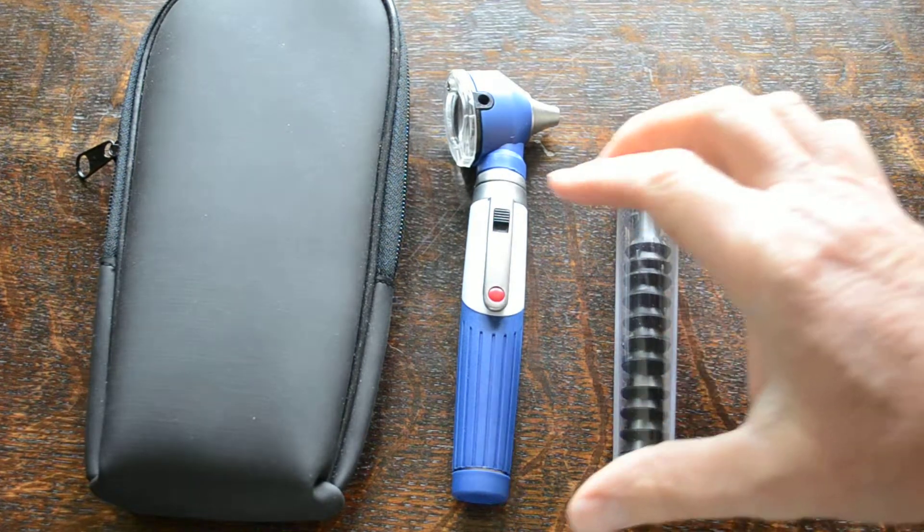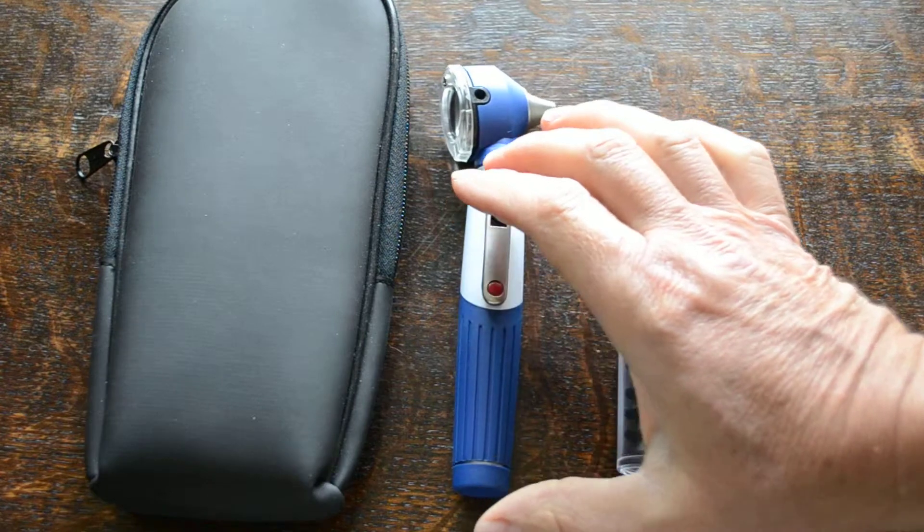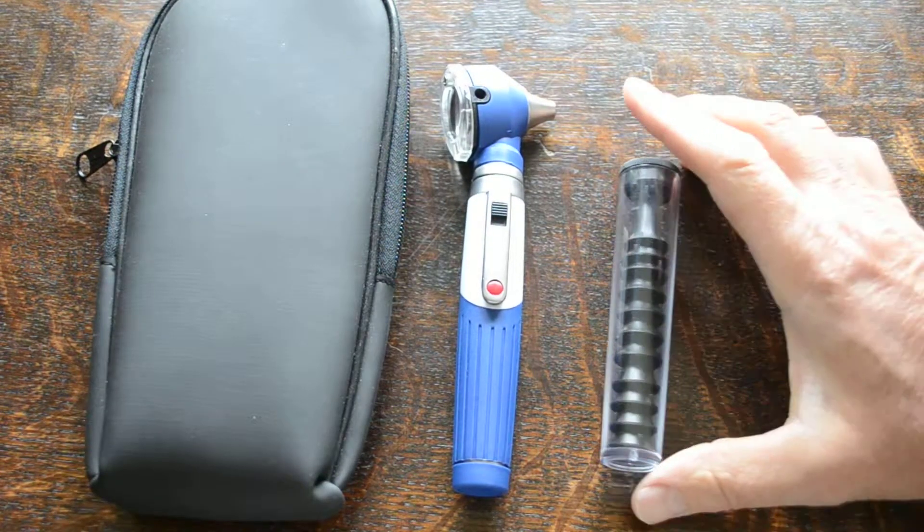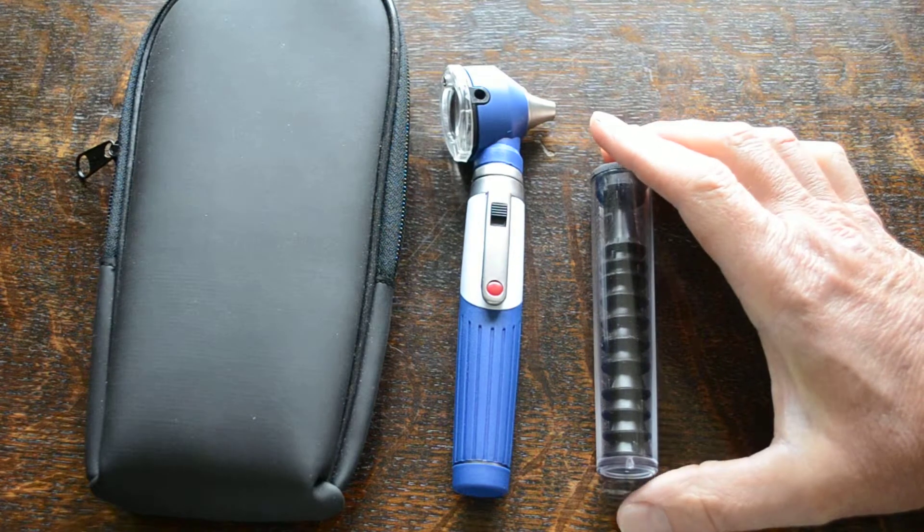This bit of kit, this Mini Otoscope, is a half-size otoscope. It's not the full size head but you do get very good views of the ear canal with this unit.